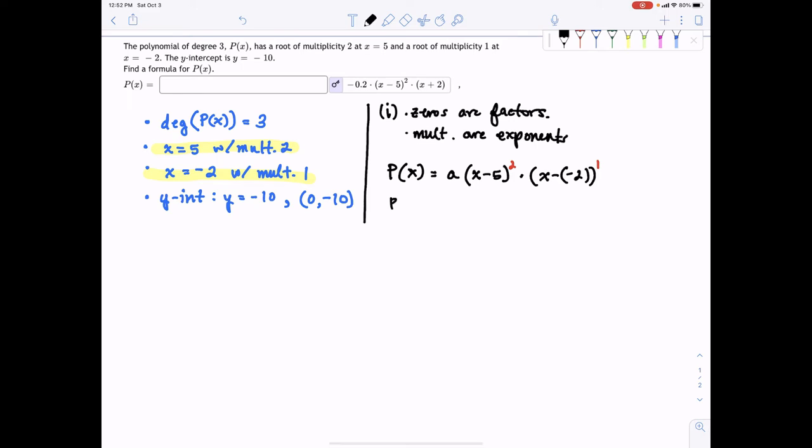Okay, and just simplifying this a little bit, we get p(x) equals a times x minus 5 squared times x plus 2.